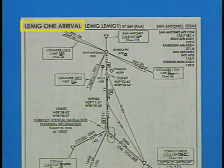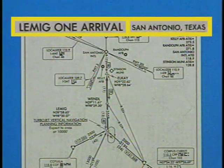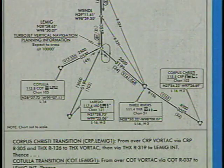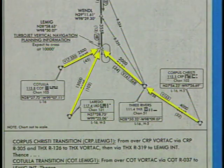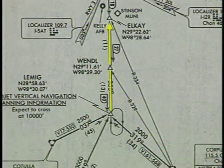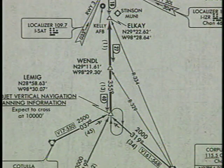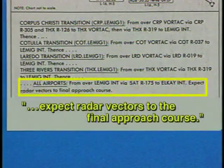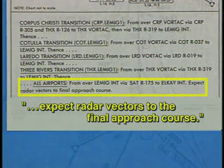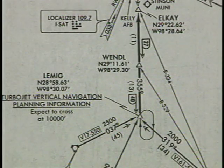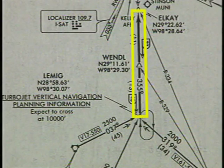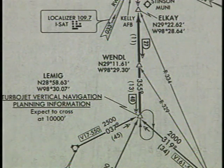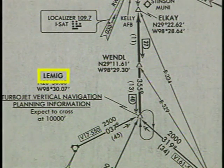Let's look at the LEMIG-1 arrival for San Antonio, Texas. This arrival, like most STARs, consists of multiple transition routes and an arrival route. This particular arrival utilizes radar vectors to the final approach course. You can distinguish the arrival route from the transitions by the bold route line. You will also notice that the STAR is named for the fix at which the arrival route begins.